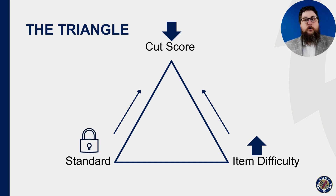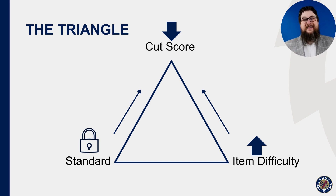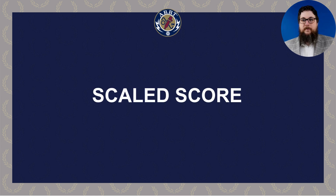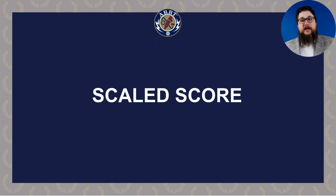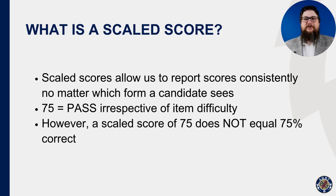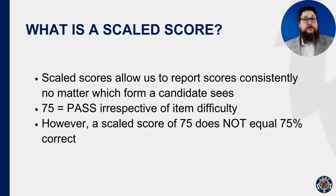The passing standard is the same no matter what form you take. So just as we change the items, the cut score will have to move to compensate. As we add difficulty, the cut score drops, and vice versa. Now that you understand how item difficulty affects cut score, you can probably imagine how difficult it would be to communicate your results in terms of correct answers. And that's where scaled score comes in. It would be difficult to communicate the raw score — the number of correct answers — for every unique version of the exam we publish. So instead, we use scaled scores.